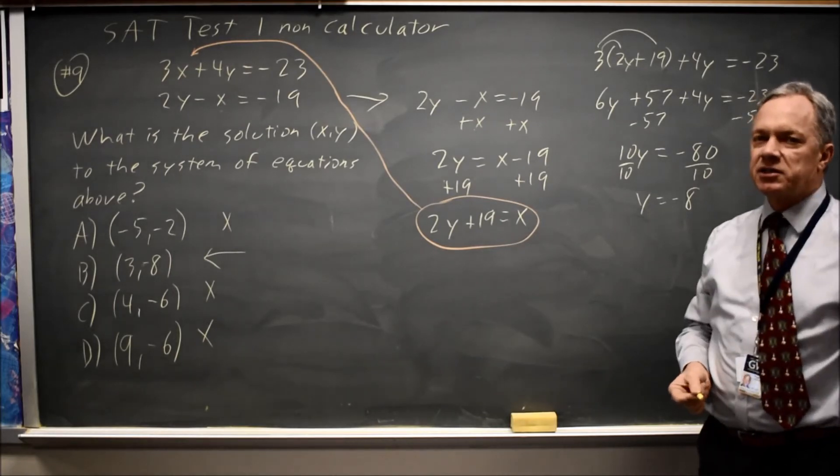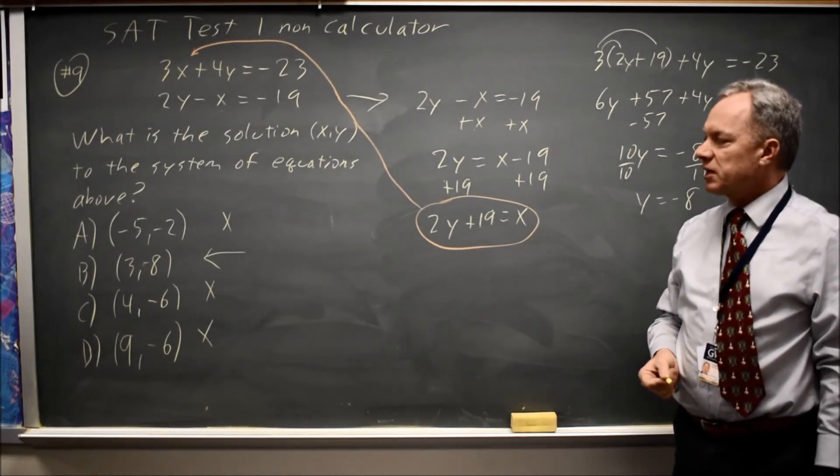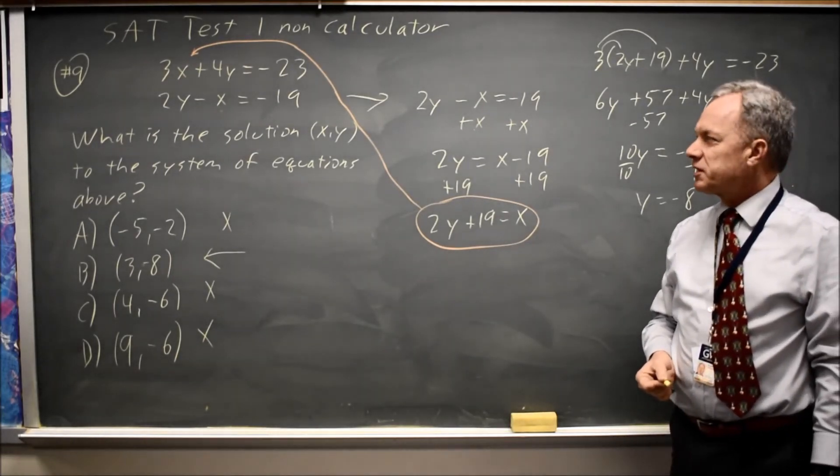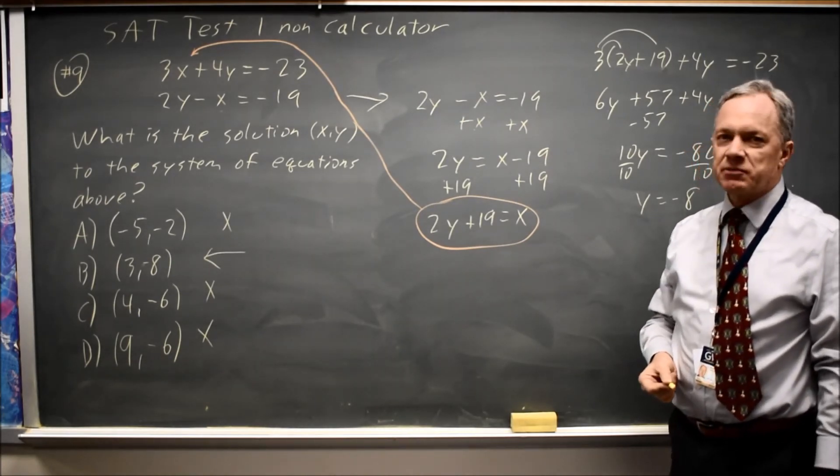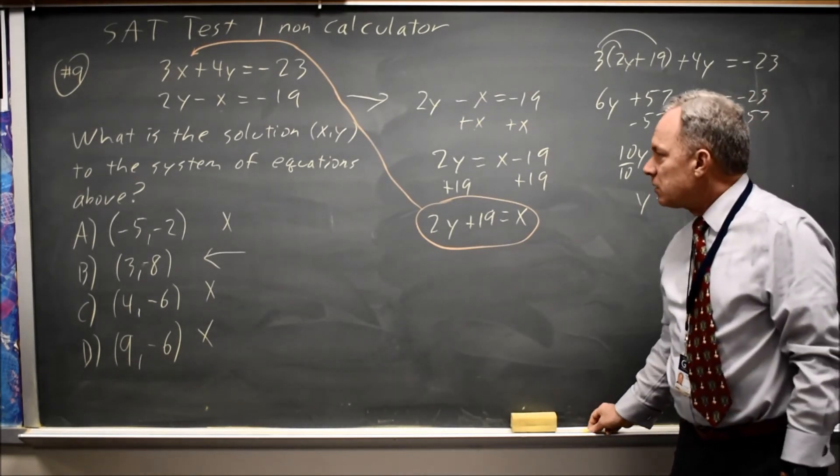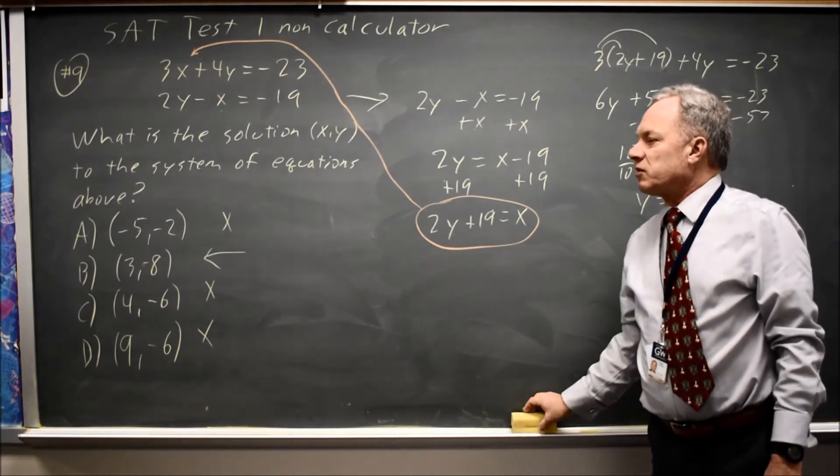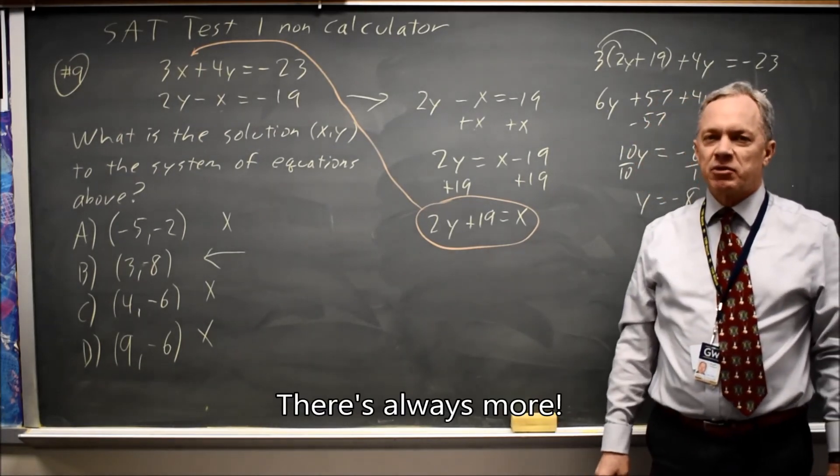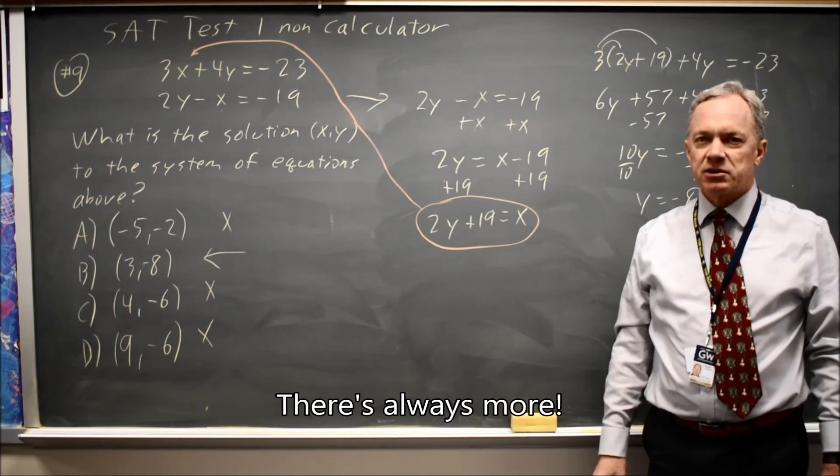Since B is the only answer choice where y equals negative 8 is an option, B is the correct answer again. I could also solve this by linear combination, but that's enough for this question. Come back soon for my next math video. With math, there's always more.